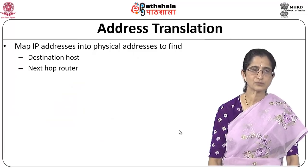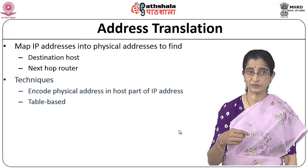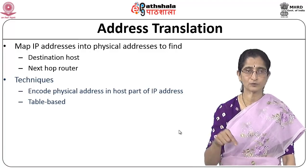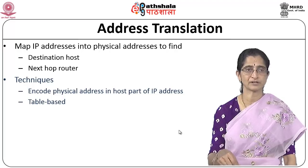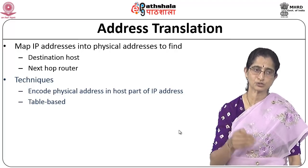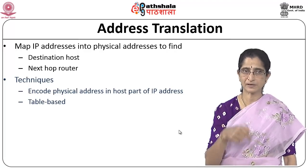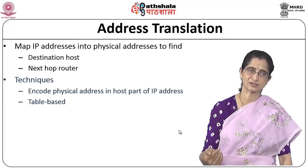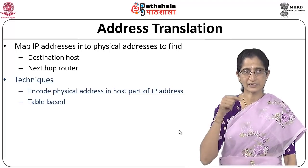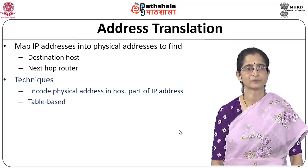When we map IP addresses into physical addresses, we need this at the destination host and at routers. When a packet arrives at a router, the router knows the IP address of the destination host, but it needs the physical address of that host to deliver the packet to the correct machine. So we need this address translation mechanism.